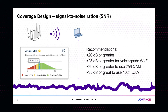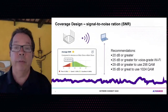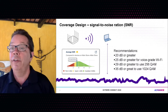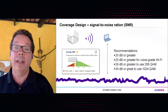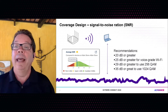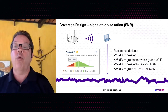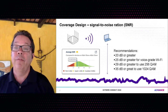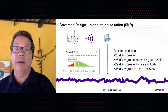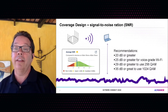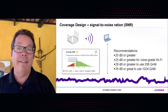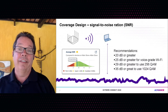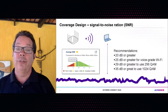Here are industry-standard SNR recommendations. At minimum, you want 20 dB or better SNR from both the client and AP perspective. For voice-grade networks, it must be 25 dB or better — that requires pristine RF conditions. For 256-QAM modulation, you need 29 dB or better. And for the new 802.11ax 1024-QAM, you need an SNR of about 35 dB or better, which effectively means you need to be in 5 GHz and very close to or right underneath the AP.